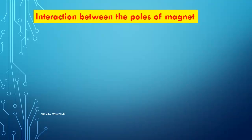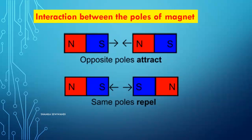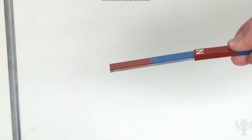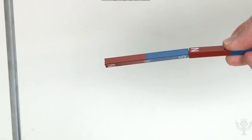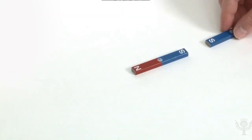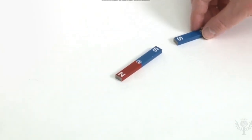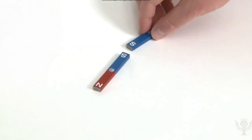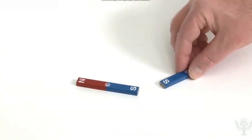Interactions between the poles of the magnet: opposite poles attract. North pole and south pole attract each other. Same poles repel — south pole and south pole repel each other. Similarly, north pole and north pole repel each other.